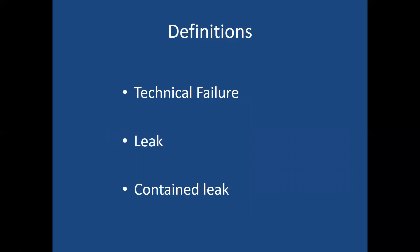Let's start with a few definitions. Technical failure occurs when the anastomosis just isn't done correctly — in other words, there's a gap, a hole. This really should be a never event, in that we should be able to inspect and test an anastomosis and ensure ourselves at the end of the case that there's no technical failure.